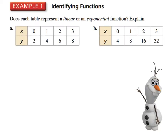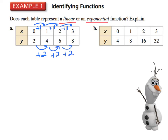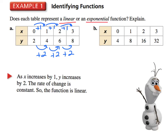So let's do example number 1. Does each table represent a linear or exponential function? We want to determine: does it make a line, or is it exponential? Linear means you're adding or subtracting by the same number. Exponential means you're multiplying by a constant factor. If we look at the first one, each x value goes up by 1. The y values go up by 2, up by 2, up by 2. Therefore, since you're adding each time, it's just going to be linear. As x increases by 1, y increases by 2. The rate of change is constant, so the function is linear.